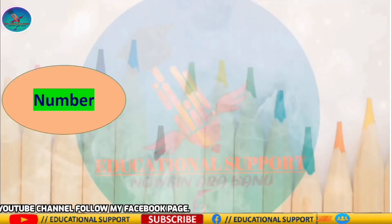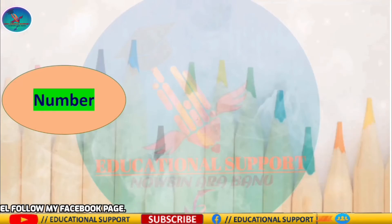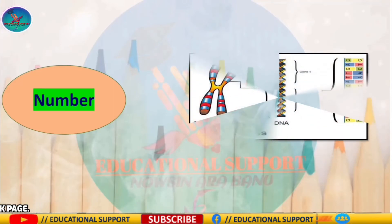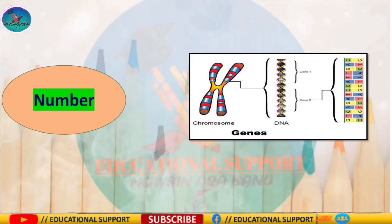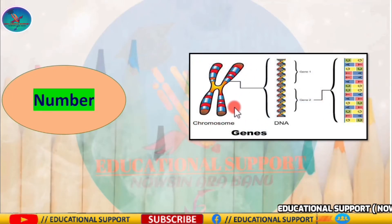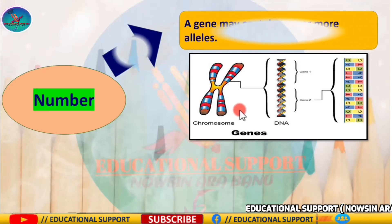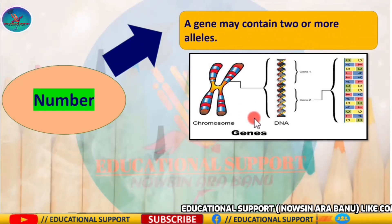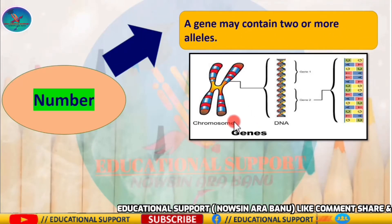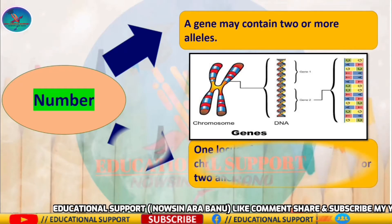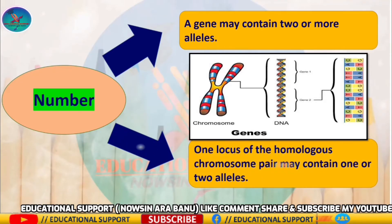The difference between allele and locus on the basis of number: a gene may contain two or more alleles, but one locus of the homologous chromosome pair may contain one or two alleles.